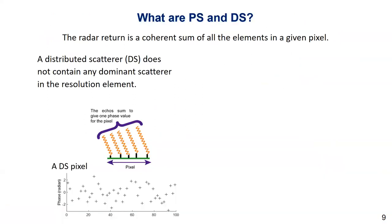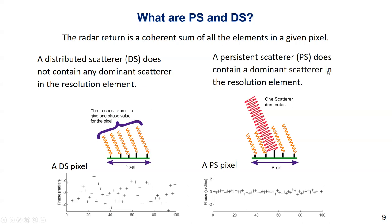The radar return is a coherent sum of all the elements in a given pixel. A distributed DS does not contain any dominant scatterer in the resolution cell. Dealing with the time series DS means working on a random vector with zero mean and variance. So distributed targets occur in native environments where many similarly bright scatterers contribute to the information in a resolution cell.